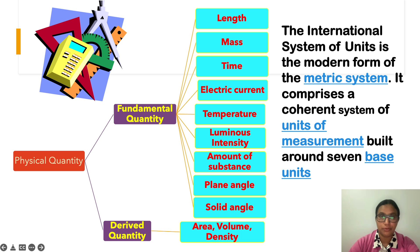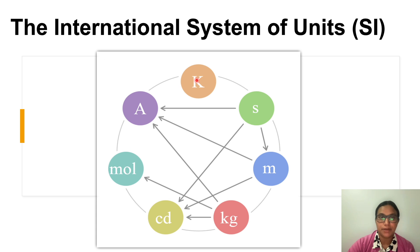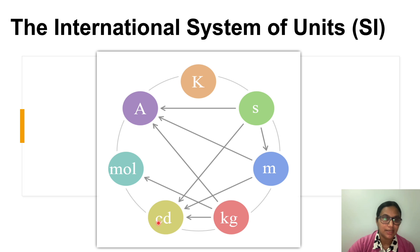The international system of units is built around seven base units, as shown in the diagram. The unit for temperature is kelvin, denoted by capital K. The unit for time is second, denoted by small letter s. The unit for length is meter, denoted by small letter m. The unit for mass is kilogram, represented by kg. The unit for luminous intensity is candela, denoted by cd.